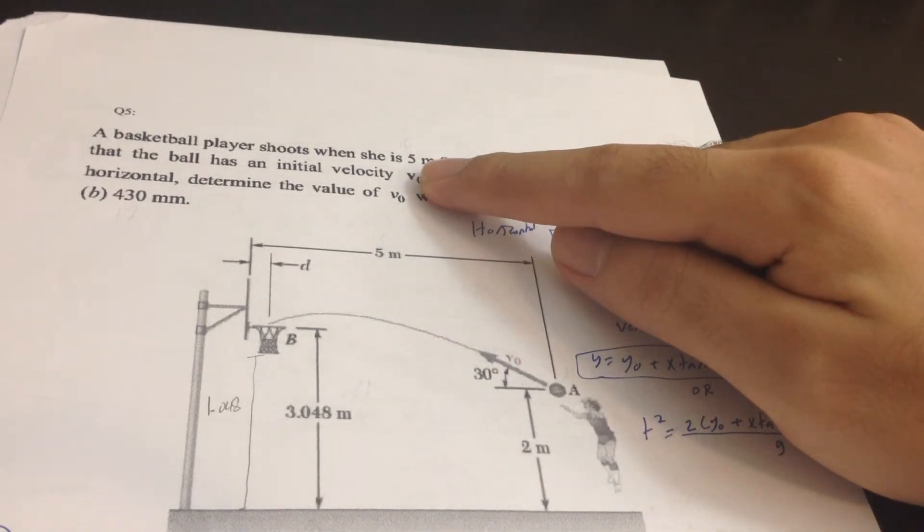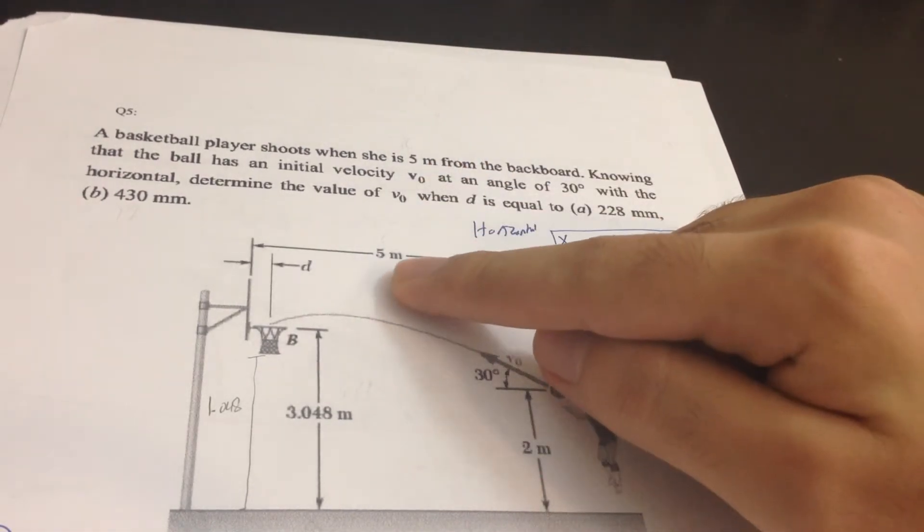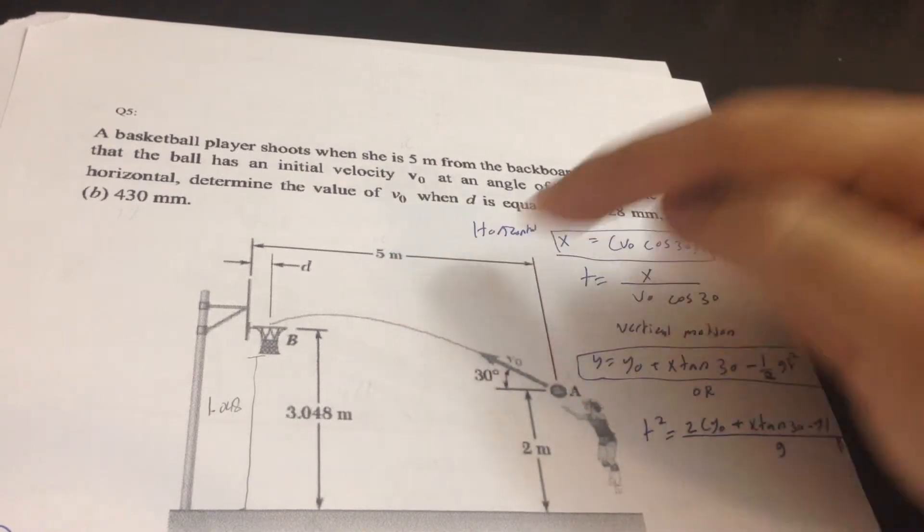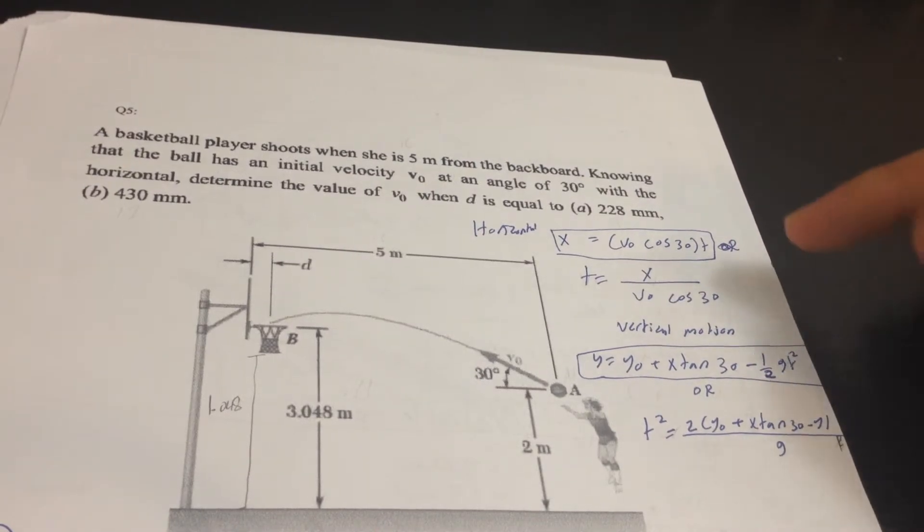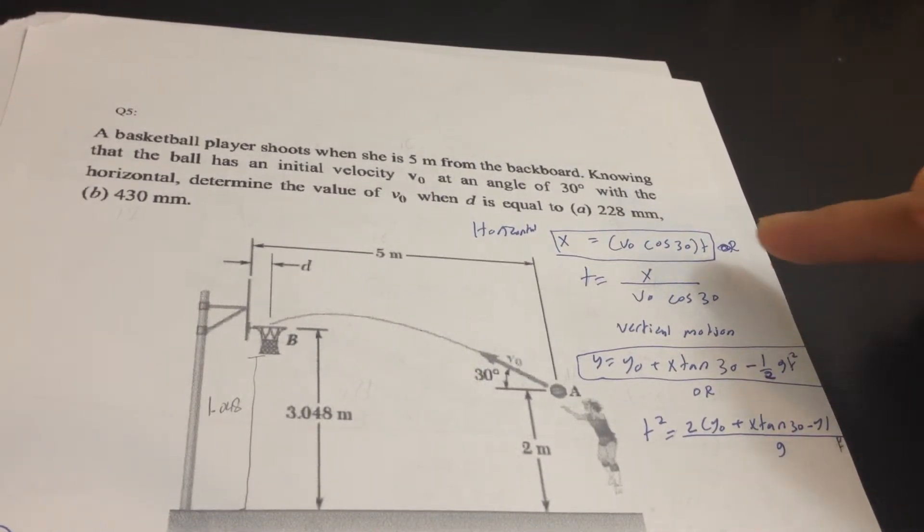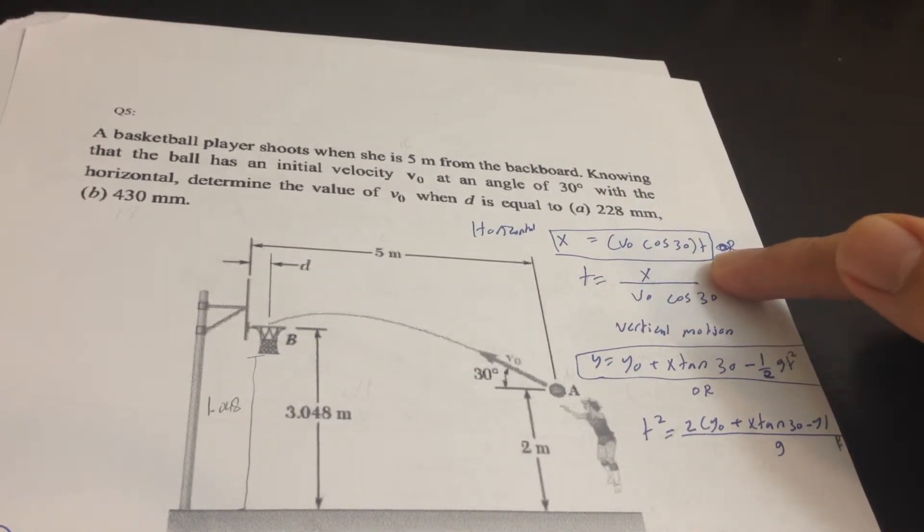So let's move down. We need to find the horizontal motion: X equals V0 cosine 30 times T, or we can write it in a simple way. We can put T equals X over V0 cosine 30.